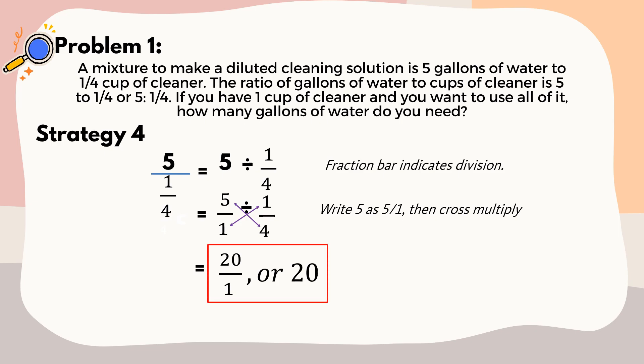Using any of these strategies, the unit rate is twenty gallons of water for every one cup of cleaner. I hope that you understand our lesson for today, and thank you for watching.